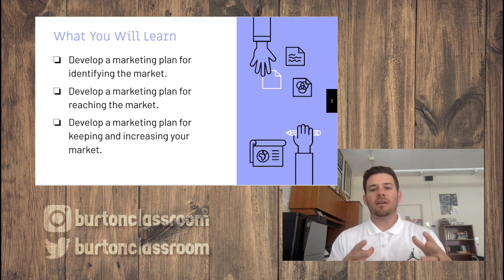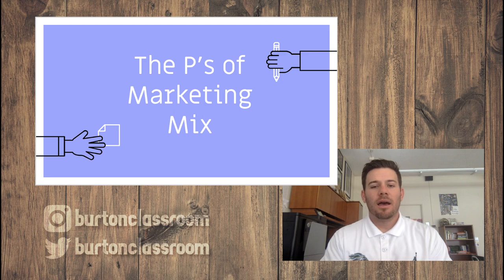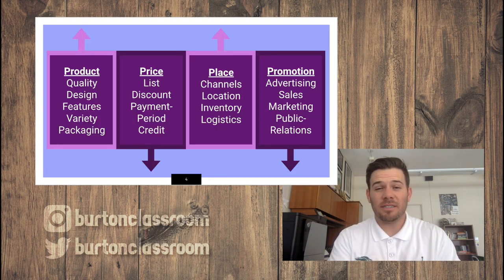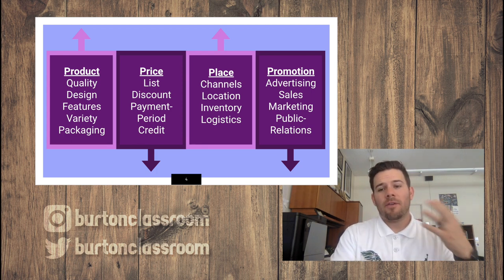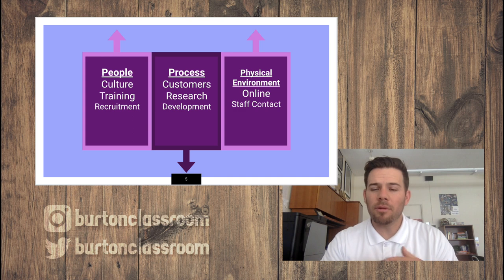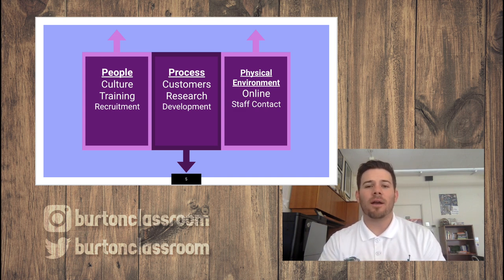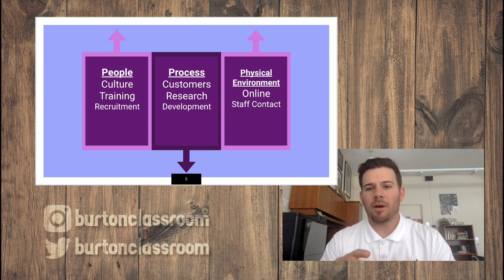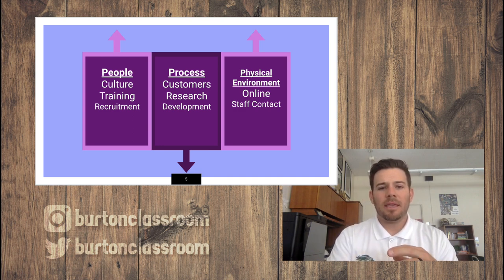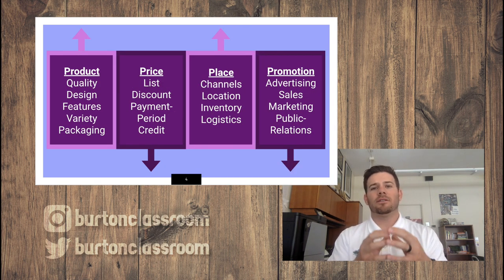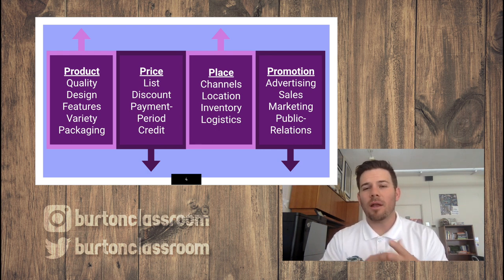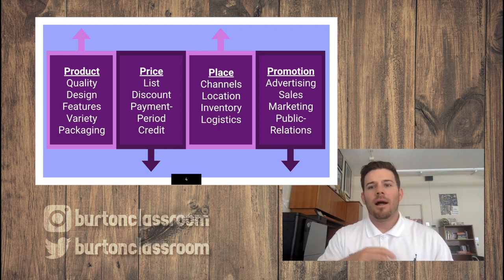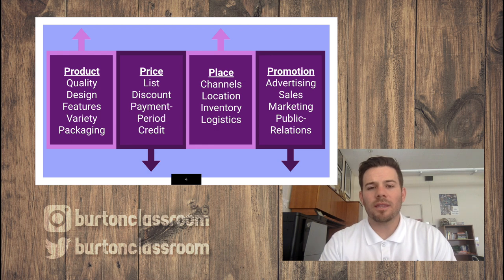The first thing we're going to talk about is the marketing mix. There are four, five, seven, even nine P's — we'll look at the four: product, price, place, and promotion. The five P's usually include people, and the seven would include process and physical environment. Those can all be covered within the four P's, so it depends on how much you want to break it apart.